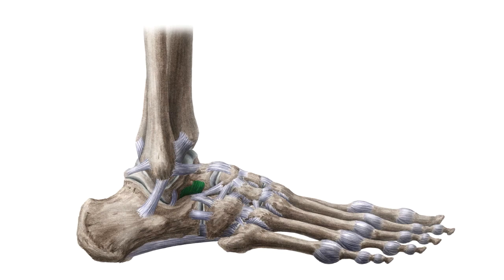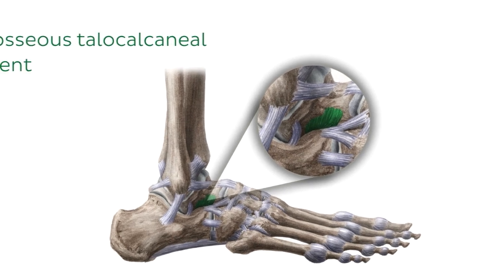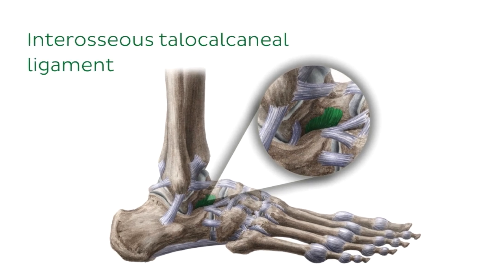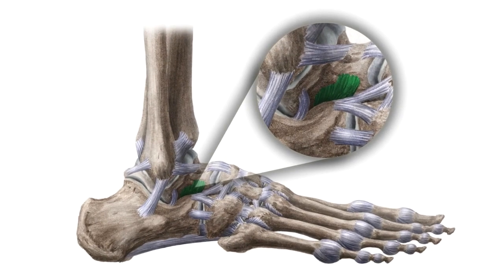The third and final ligament of the subtalar joint, now highlighted in green, is called the interosseous talocalcaneal ligament. Together, these ligaments stabilize the subtalar or talocalcaneal joint.